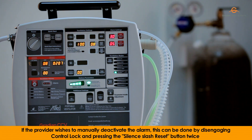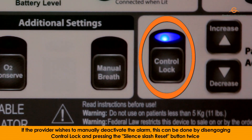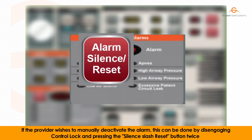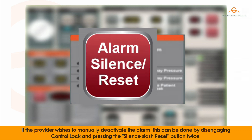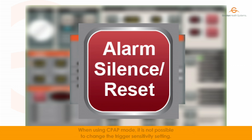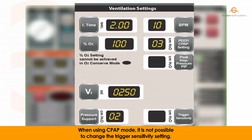If the provider wishes to manually deactivate the alarm, this can be done by disengaging control lock and pressing the silent/reset button twice, or by changing the ventilation mode or ventilation parameters. When using CPAP mode, it is not possible to change the trigger sensitivity setting.